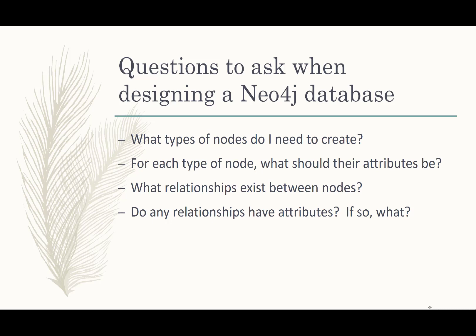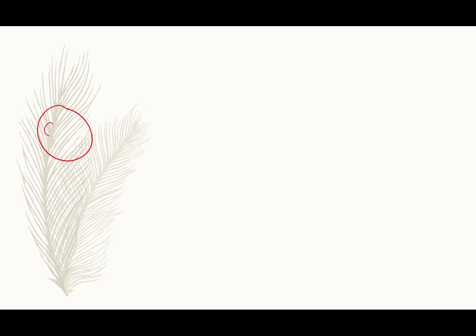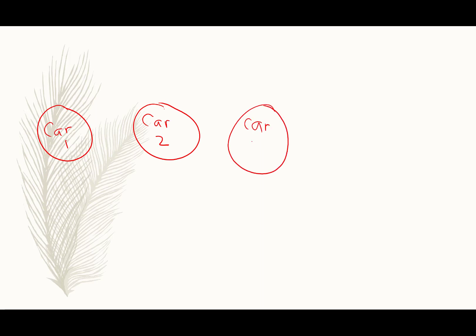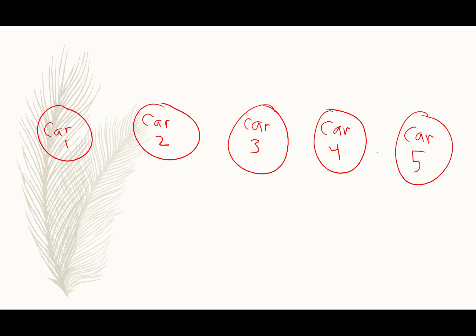Let's try to design a car database. We'll have car 1, car 2, car 3, car 4, and car 5 on our lot. Unlike an ER diagram which works against entity types — where you'd show car once — in a Neo4j network diagram you're going to show the entities themselves. So if there are 5 cars, you can visually depict 5 cars.